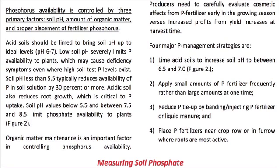The last important management topic to go through clearly with students is the four primary phosphorus management strategies: managing pH through liming; applying small amounts of fertilizer frequently rather than a large amount at one time; reducing tie-up by banding and placement such as injecting; and placing phosphorus fertilizers near the crop row or in-furrow where roots are most active.